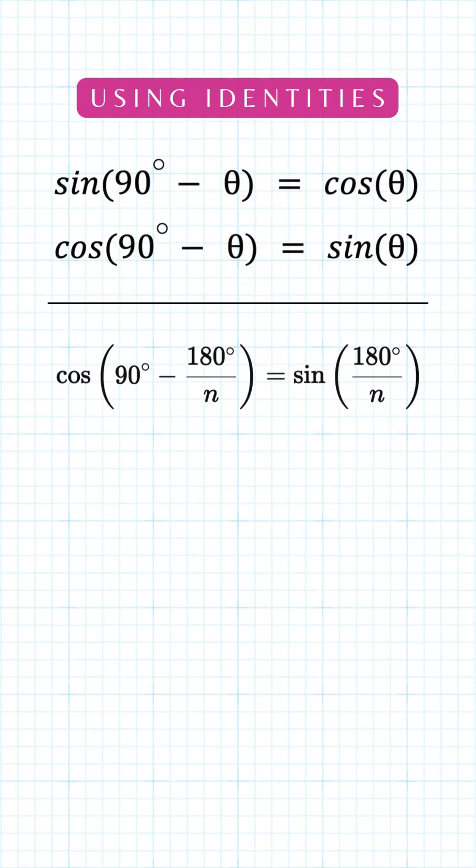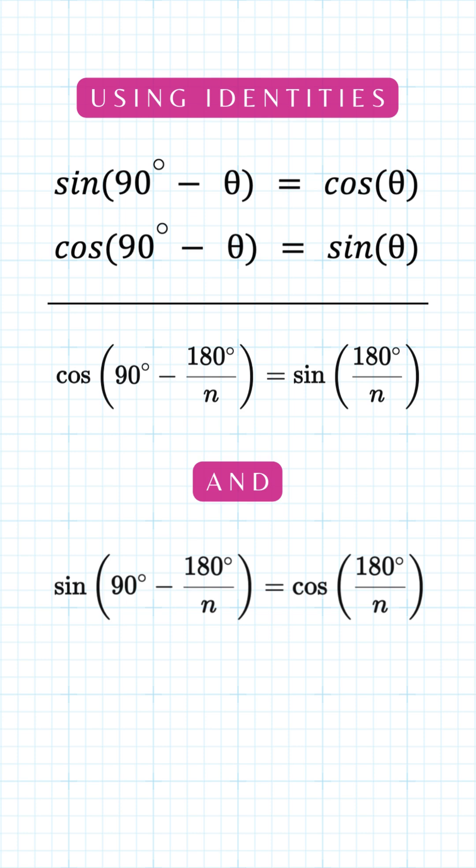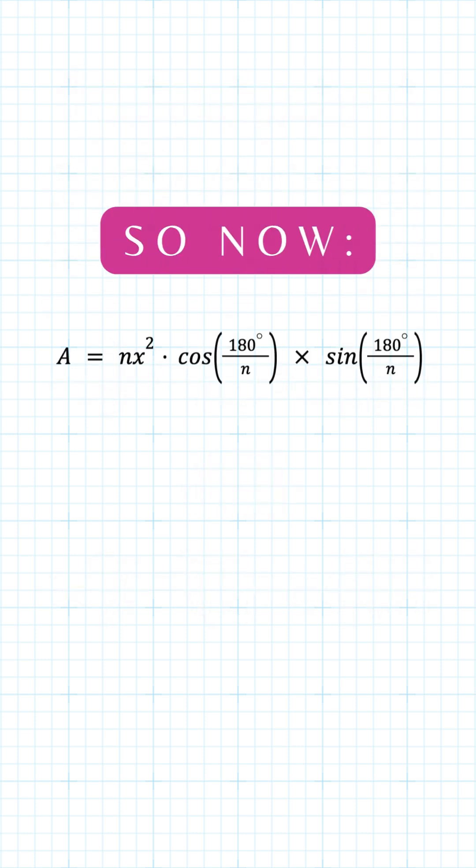Now using some trigonometric identities, we can turn the cos term into sin 180 degrees over n and the sin term into cos 180 degrees over n. Now this is the simplified formula.